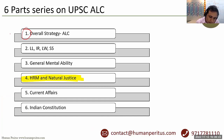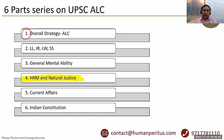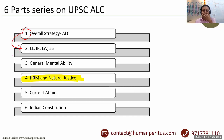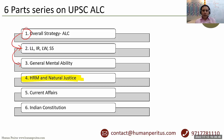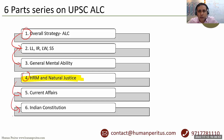Part 1 covered overall strategy — how to approach the exam, how to study, cut-off, which topics are important, weightage, difficulty level, and previous exam analysis. Part 2 covered Labor Laws, IR, Social Security, and Social Welfare. Part 3 was General Mental Ability — numerical aptitude and reasoning. Today is Part 4. Part 5 is Current Events, and Part 6 is the Indian Constitution.